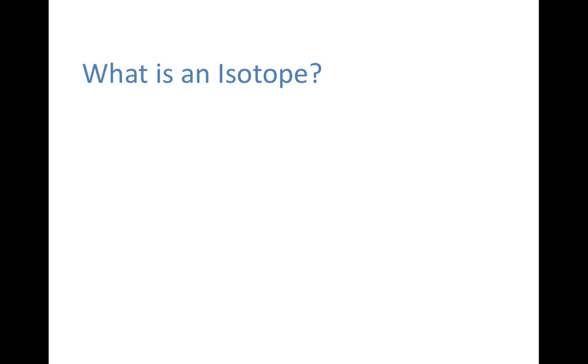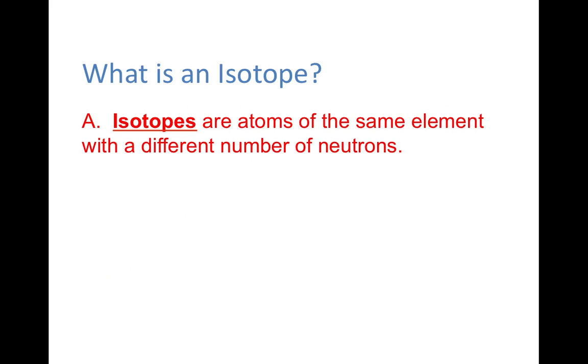Let's move on to what an isotope is. So in your notes, go ahead and add my definition of an isotope, which are atoms of the same element with a different number of neutrons. So everything else about them is the same, number of electrons, number of protons. They're just different because of the number of neutrons.